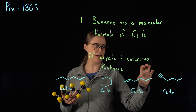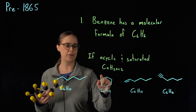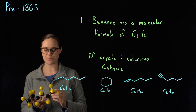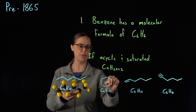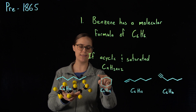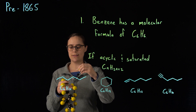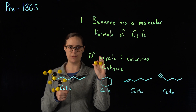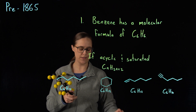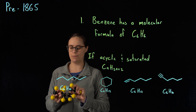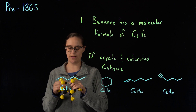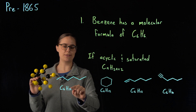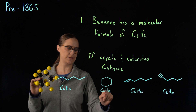Every time I add some feature — whether it's a cyclic structure or a multiple bond — I end up losing two hydrogens. So let's convert hexane to cyclohexane. Cyclohexane has six carbons in a ring. In order to do this, I need to remove a hydrogen from the first carbon and a hydrogen from the last carbon — taking away two hydrogens — because carbon likes to make four bonds total. So cyclohexane has C6H12.